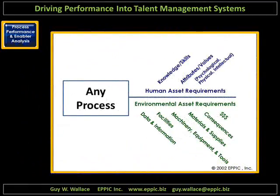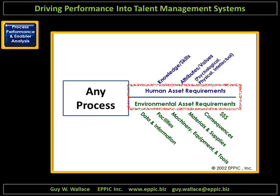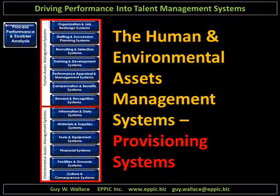Years ago, I adapted the Ishikawa diagram with some of the work from Tom Gilbert, who wrote Human Competence in 1978. I look at enablers in two sets: the human asset requirements and their enablers, and the environmental asset requirements and their enablers. The requirements are driven by the needs of the process. When I look to human and environmental asset management systems — those systems in an enterprise, or external to an enterprise — that provision the assets that the process requires, I use this model to frame my analysis.